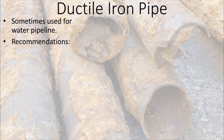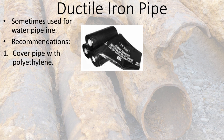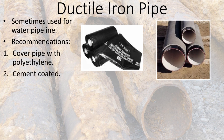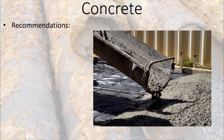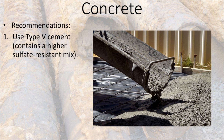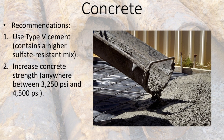For ductile iron pipe, which is sometimes used for water pipelines, recommendations may include covering the pipe with polyethylene, cement coating, coal tar enamel, or wax tape. For concrete, it's pretty standard to use Type 2 cement; however, with highly corrosive soils, recommendations may include using Type 5 cement, which contains a higher sulfate-resistant mix, as well as increasing concrete strength anywhere between 3,250 PSI and 4,500 PSI.